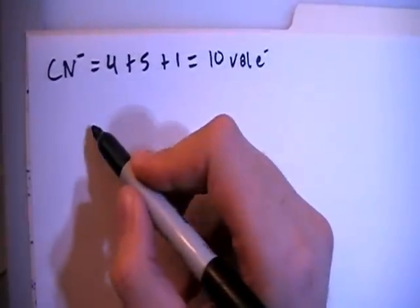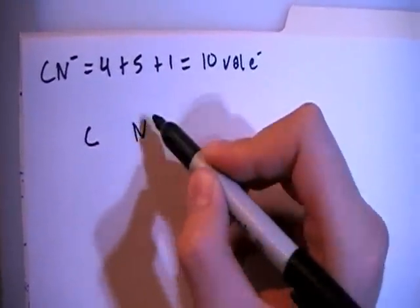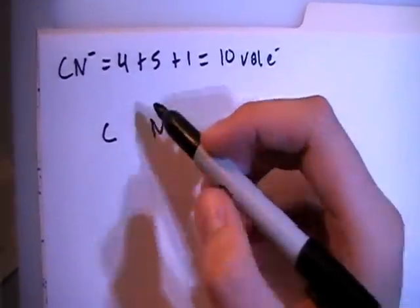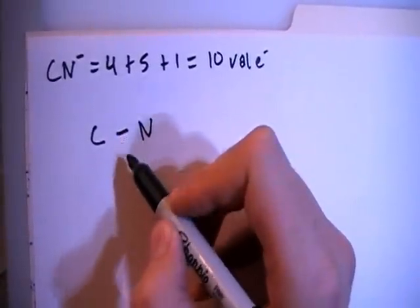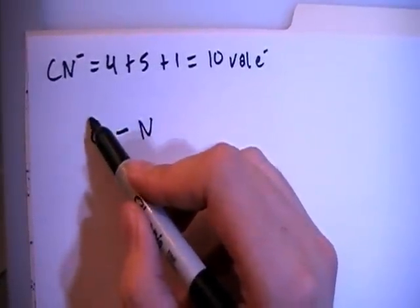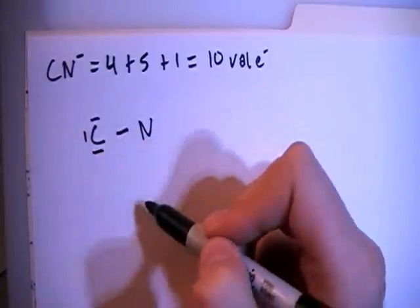So this one is fairly simple. You have carbon and nitrogen, and we can start off by single bonding them and just giving the carbon the full eight octet.